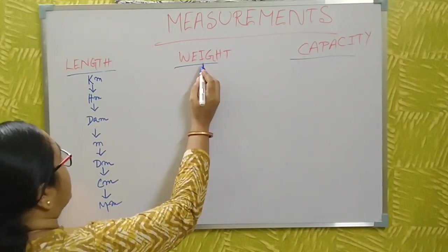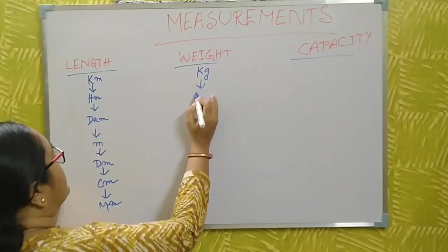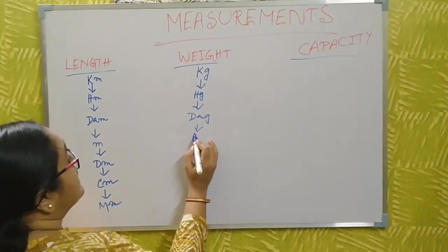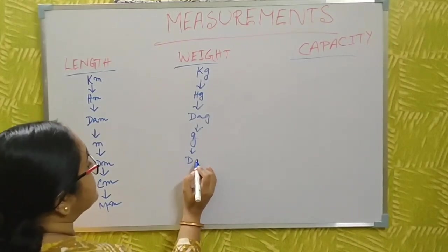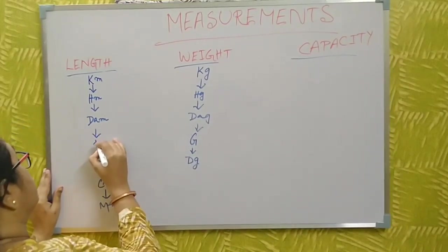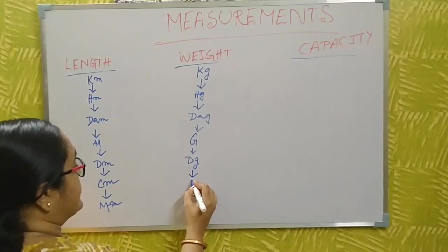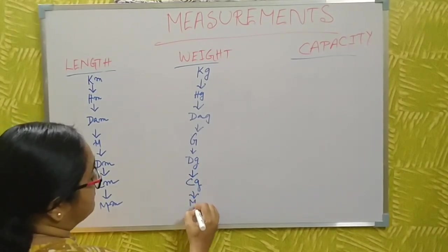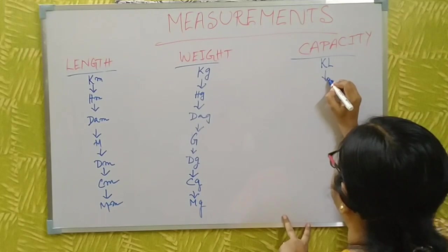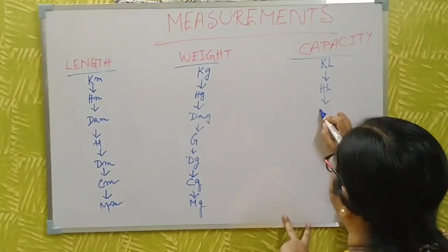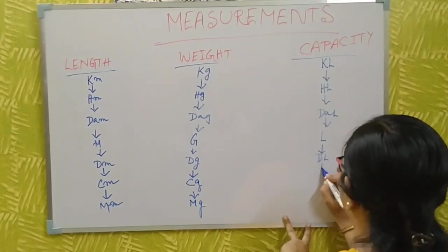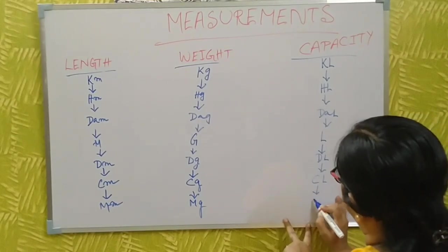The weight units are also in the same order: first kilogram, then hectogram, then decagram, then gram, then decigram, then centigram, then milligram. And similarly for capacity: first kiloliter, then hectoliter, then decaliter, then liter, then deciliter, then centiliter, then milliliter.